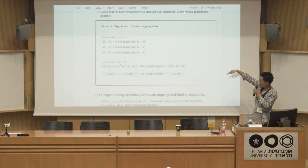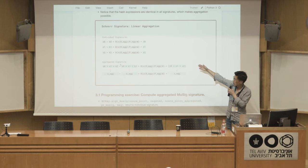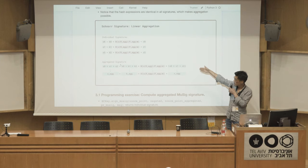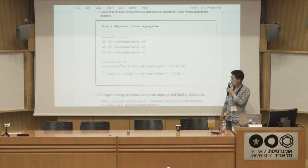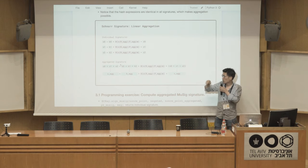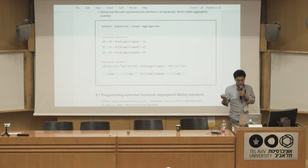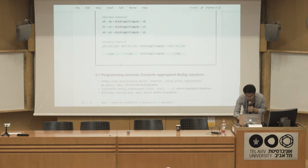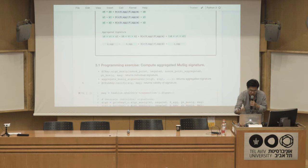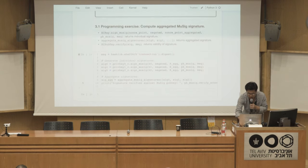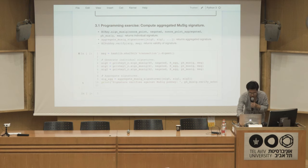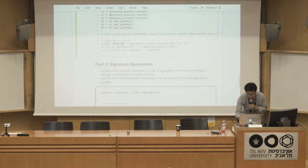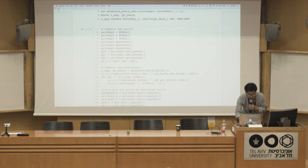Finally, we sign. The hash expression in the signature uses the aggregated nonce point, so we can just add the different signatures and obtain a valid Schnorr signature. The nice thing about MuSig is that the resulting signature is indistinguishable from a non-MuSig signature on chain.